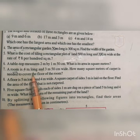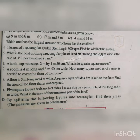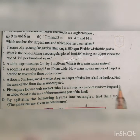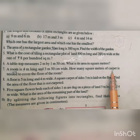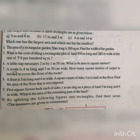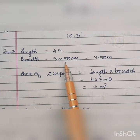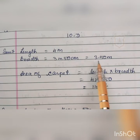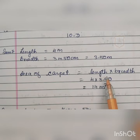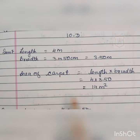Question number 7: A room is 4 meters long and 3 meters 50 centimeters wide. How many square meters of carpet is needed to cover the floor? The length is 4 meters and the breadth is 3 meters 50 cm, which equals 3.50 meters. The area of carpet needed equals length × breadth, that is 4 × 3.5, giving 14 square meters.